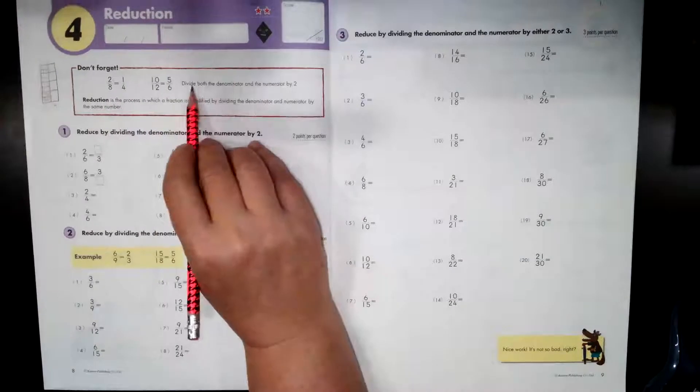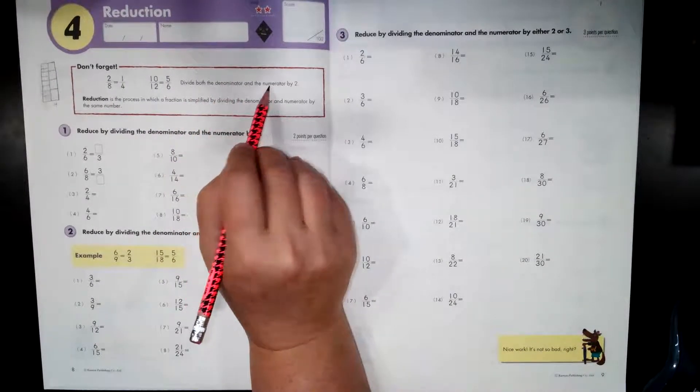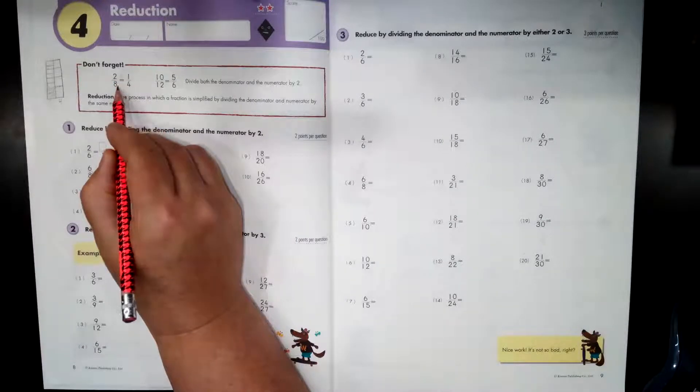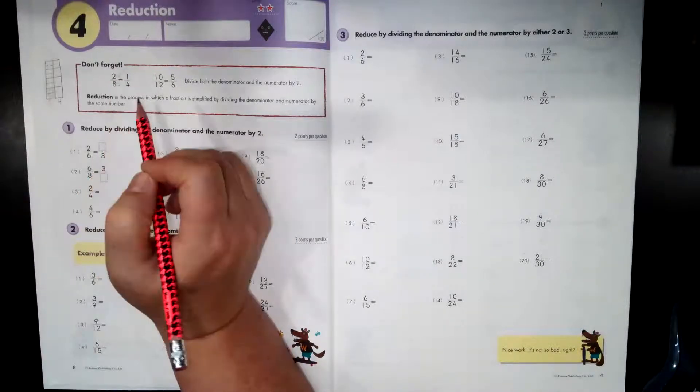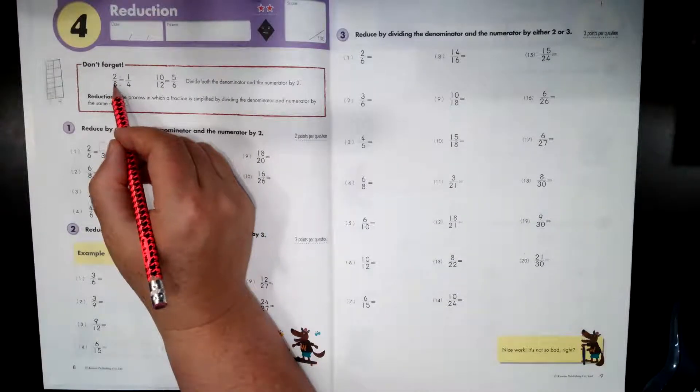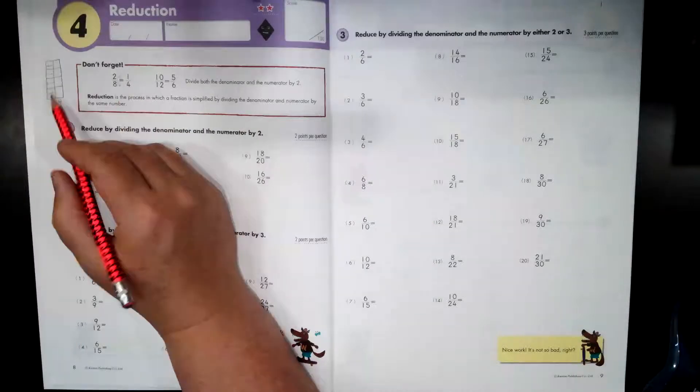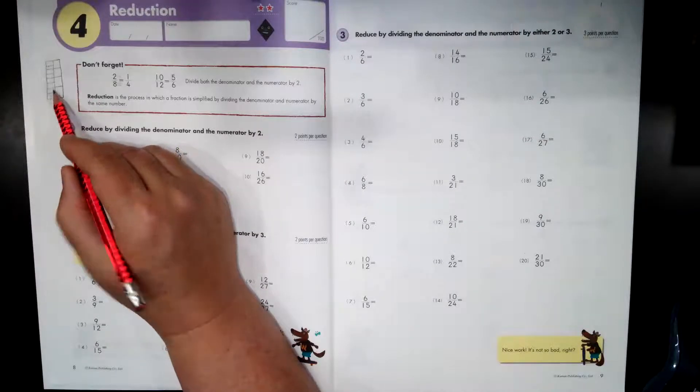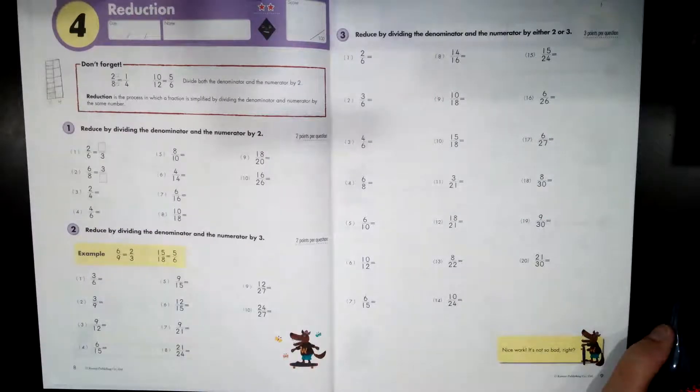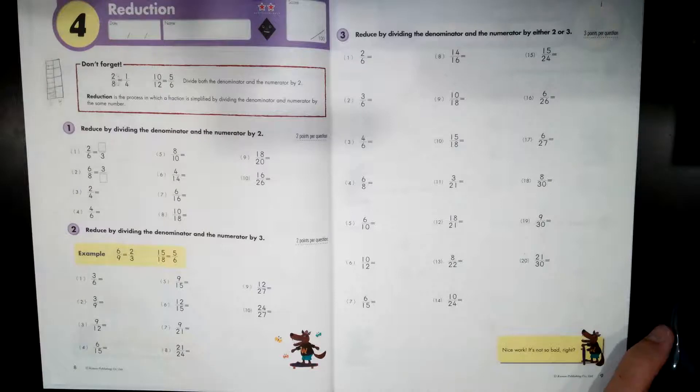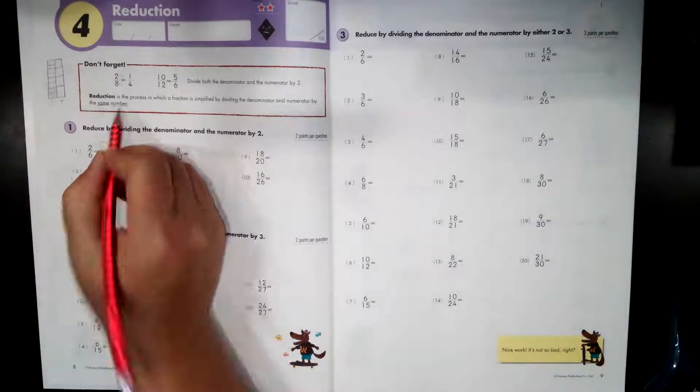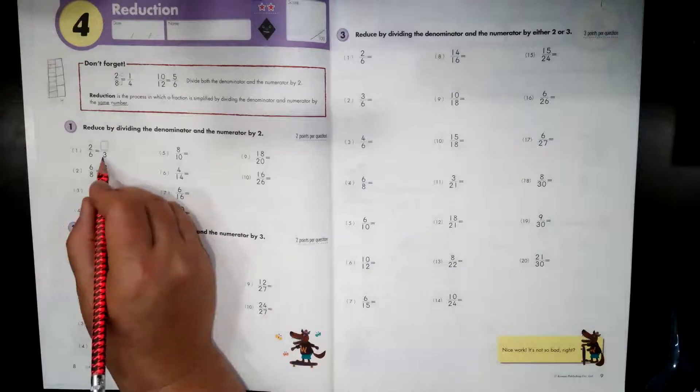In this reminder, they say divide both the denominator and the numerator by two. So by dividing by two, we divide the bottom by two and the top. So I did it and said it opposite, but you know what I mean. When you divide both the top and the bottom by two, you get one fourth. So we took our eighths and we divided them by two and we get fourths. So reduction is the process in which a fraction is simplified by dividing the denominator and the numerator by the same number. That's the most important part.